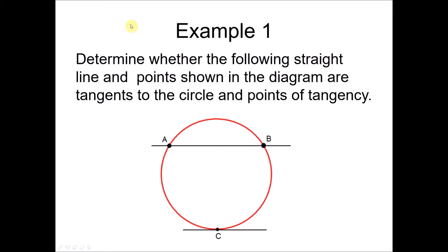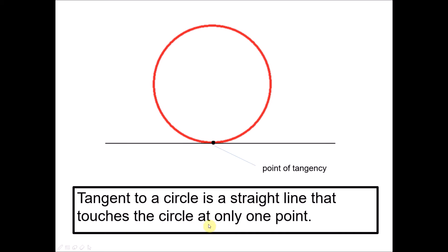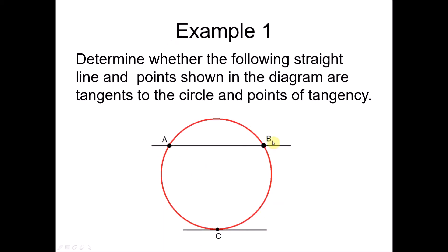We'll look at more examples. Example 1: determine whether the following straight lines, at points A, B, and C shown in the diagram, are tangents to the circle and identify the points of tangency. If you look at this straight line, it passes through or touches the circle at two points, A and B. But remember the definition — a tangent to a circle is a straight line that touches the circle at only one point. Hence, this straight line is not a tangent, and points A and B are not points of tangency. Instead, this straight line touches the circle at only one point, point C. Hence, this straight line is a tangent, and point C is a point of tangency.